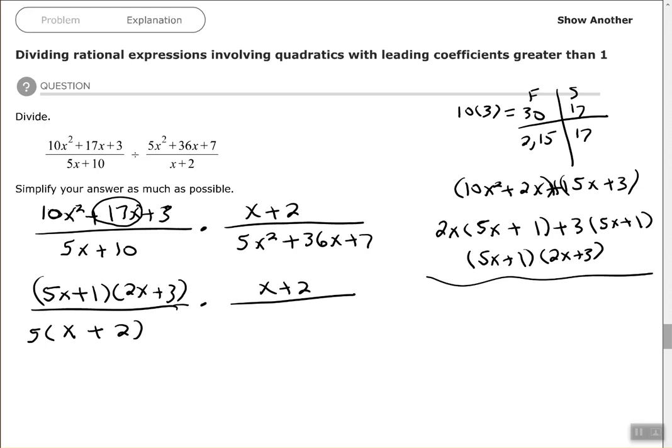Then I have x + 2 in my numerator, and then I need to factor again—factor my denominator using the AC method. So 5 times 7 is 35. I need factors of 35 that add up to be 36, which will be 35 and 1.